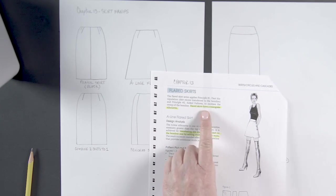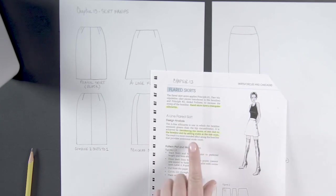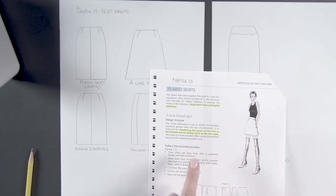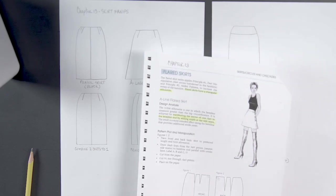They have a triangle silhouette. And we're going to transfer the excess of one dart to the hemline by adding width at the side seam. So we're going to create this. Let's do this one.